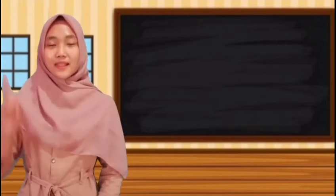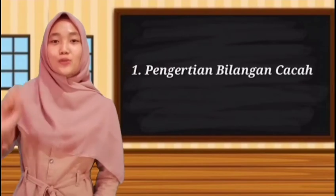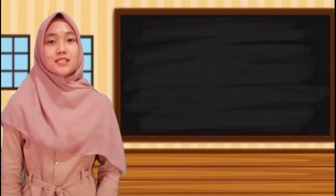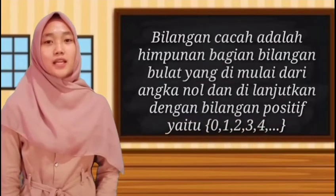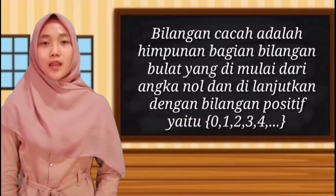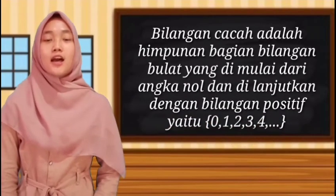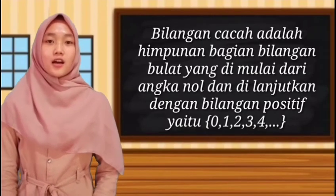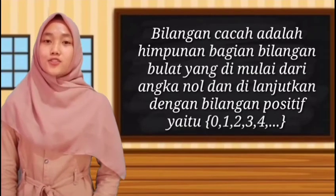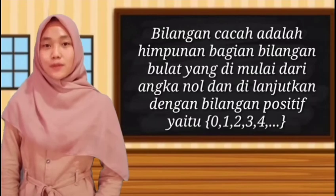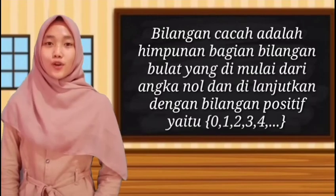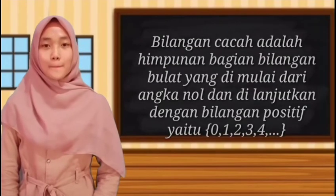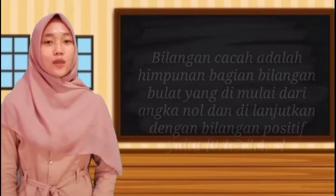Pembahasan yang pertama yaitu pengertian bilangan cacah. Bilangan cacah adalah himpunan bagian dari bilangan bulat yang dimulai dari angka 0, dan dilanjutkan dengan bilangan positif yaitu 0, 1, 2, 3, 4, dan seterusnya.